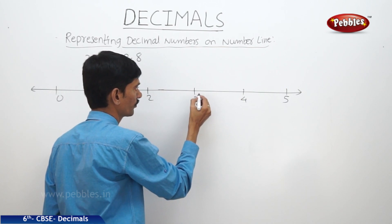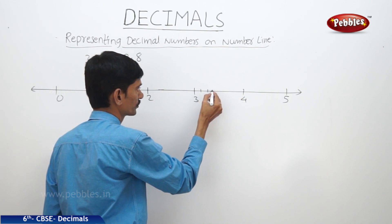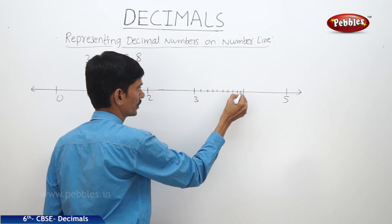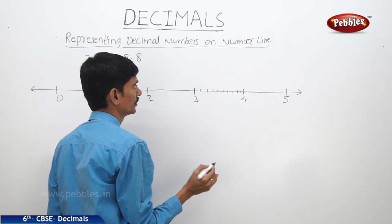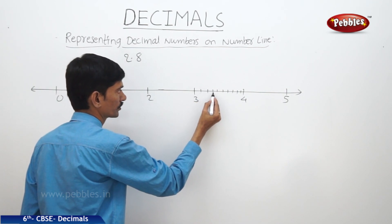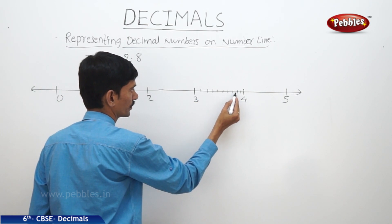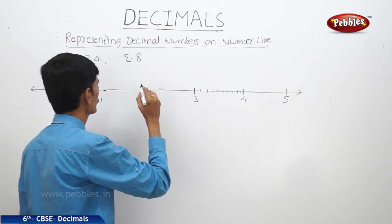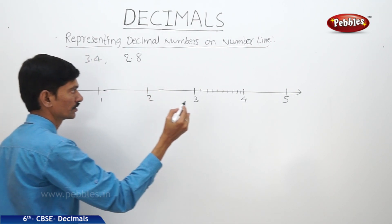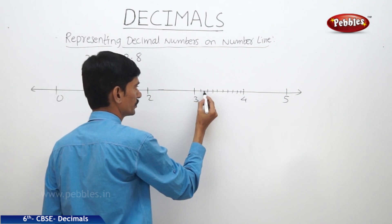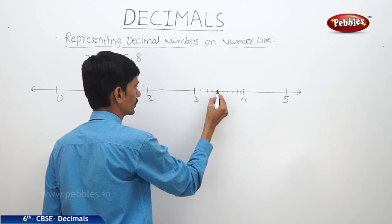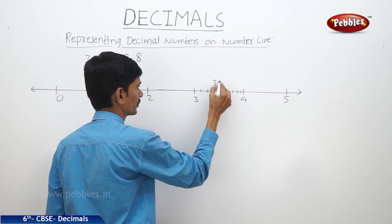To represent three point four, we look between three and four, and divide that interval into ten equal parts. Out of these ten equal parts, we want the fourth part. Counting one, two, three, four — that point represents three point four on the number line.